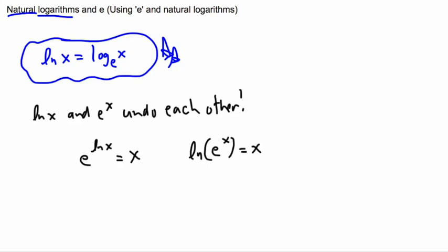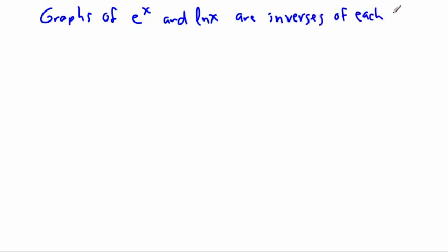And we'll take away those red marks. But just to show you, that's sort of what happens. That's how it works. And furthermore, we can look at the graphs. So what if we do graphs of these? So let's say here, the graphs of E to the X and LN X are inverses of each other.